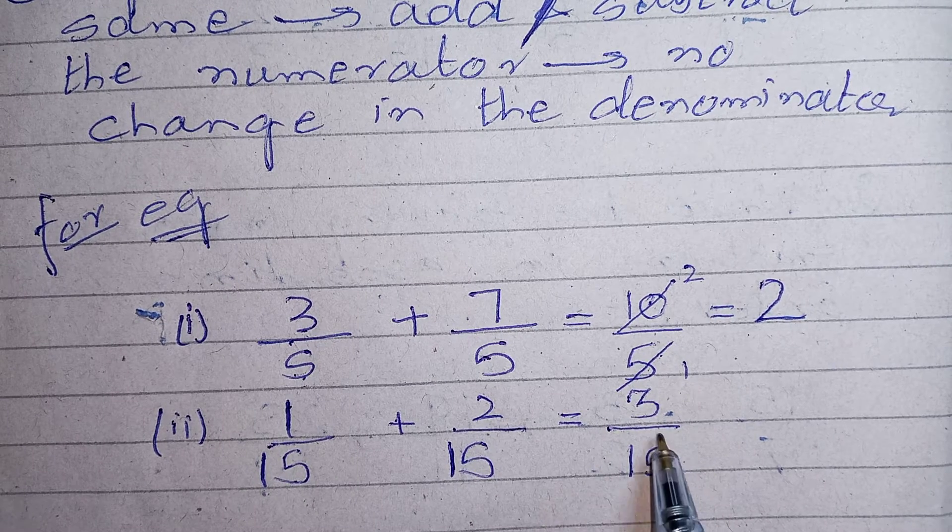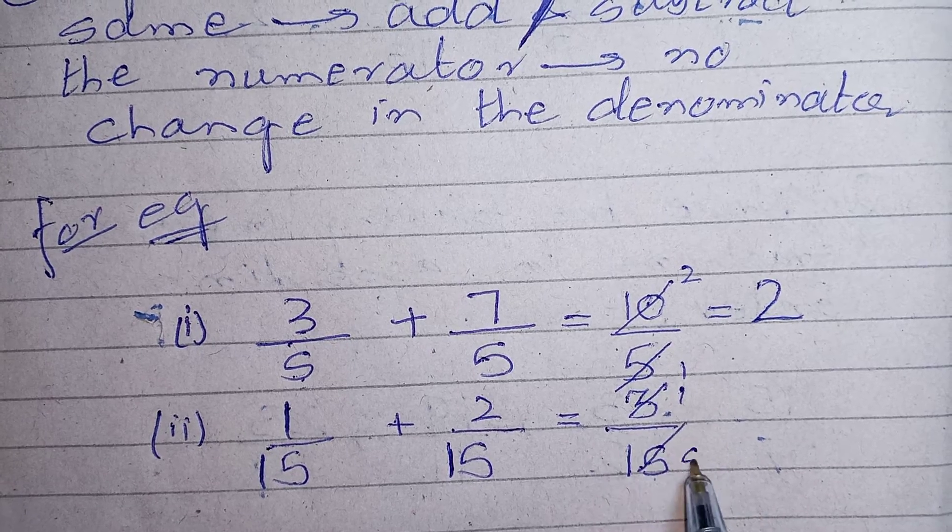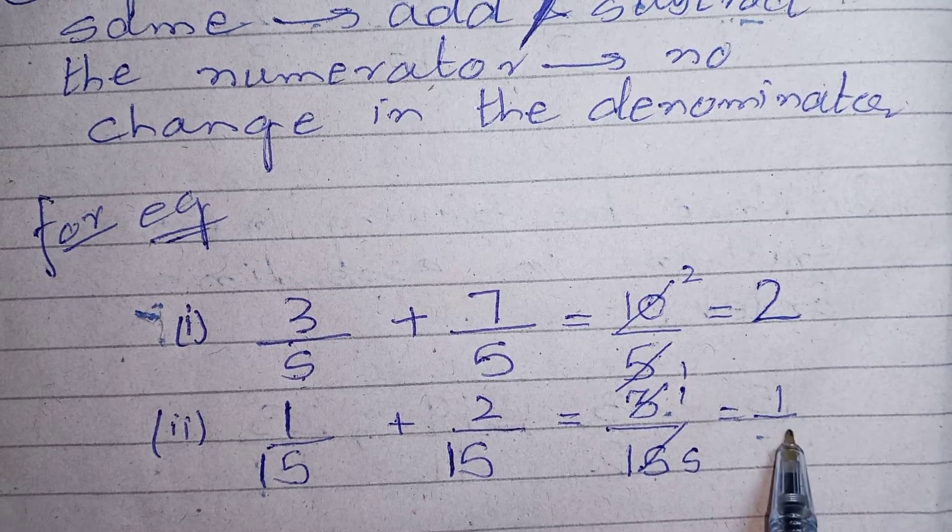Again I can have 3 and 15 in a table of 3. So just reduce it and write the answer.